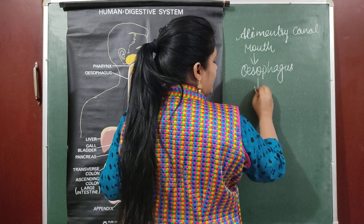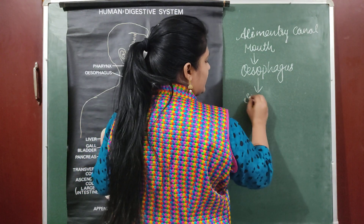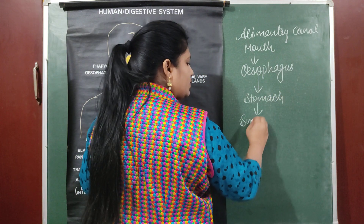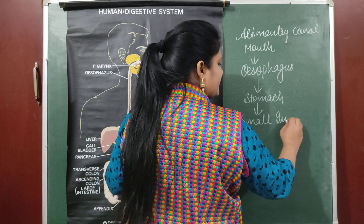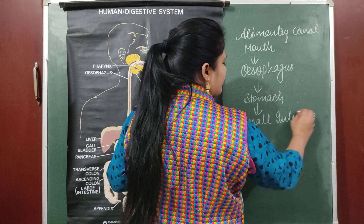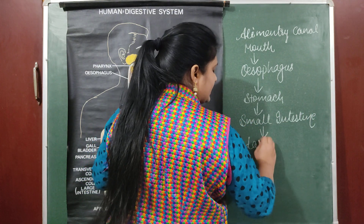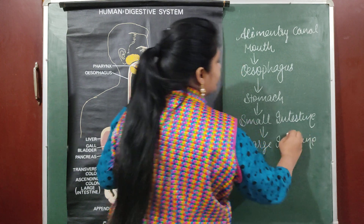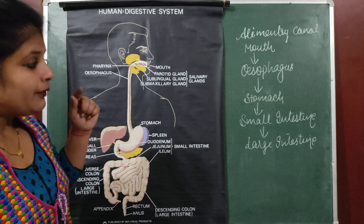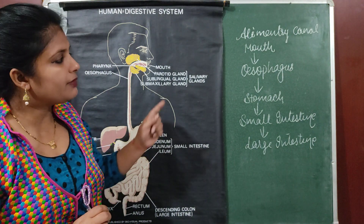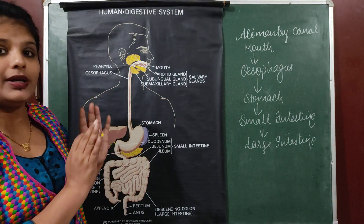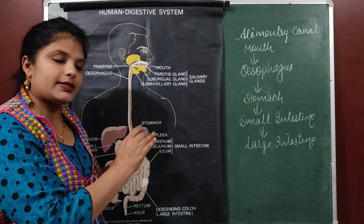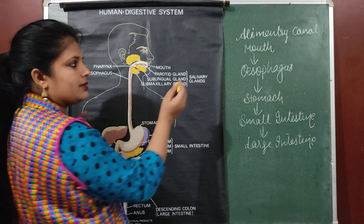From the esophagus, food enters into the stomach — it is a J-shaped organ. From the stomach, food enters into the small intestine, and from the small intestine food enters into the large intestine. These are the organs of the alimentary canal. When we talk about the digestive system, we will include all the glands as well — that is what makes it the digestive system rather than just the alimentary canal.